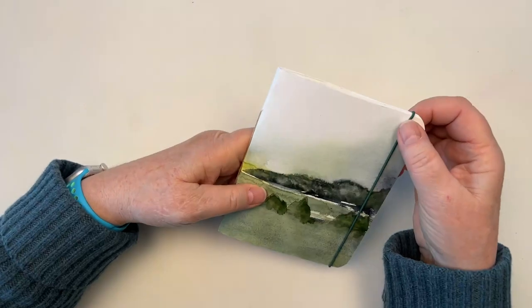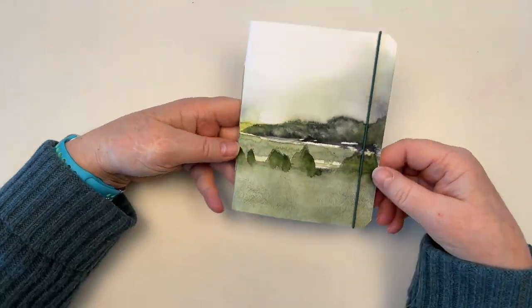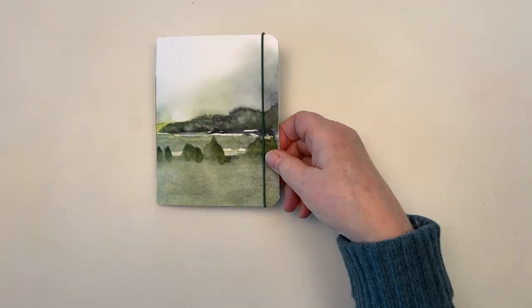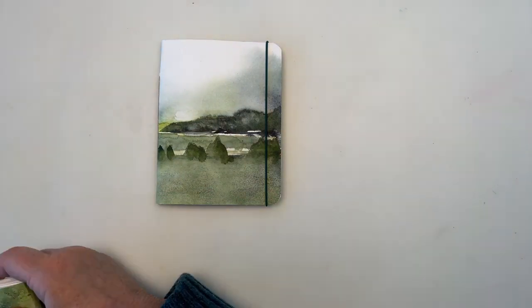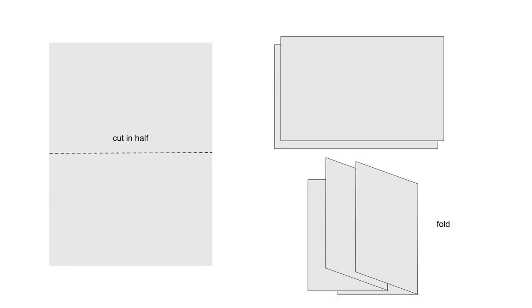Our last example is actually bound like a traditional book, but with just a few pages, which means we can avoid a lot of bookbinding complications. I'm going to start again from a 9 by 12 sheet of paper, cut it in half, and then fold those halves in half again.